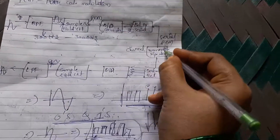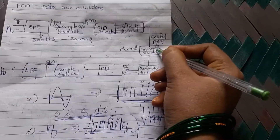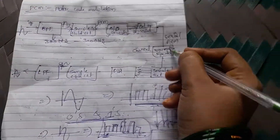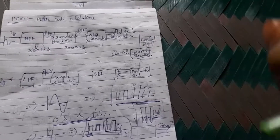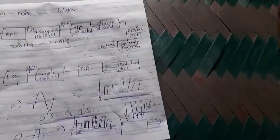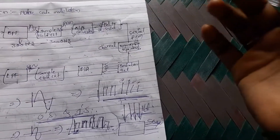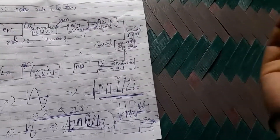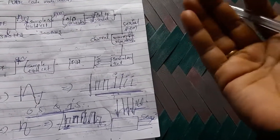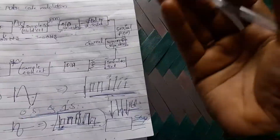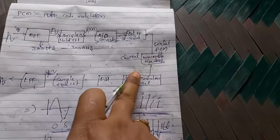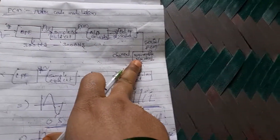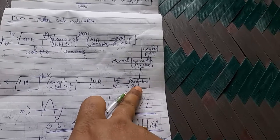The serial PCM is given to the regenerative repeaters, which act as the channel. The channel is the medium through which information is sent — for example, when sending a message from one mobile to another, we use MTSS (Mobile Telephone Switching Stations) as the channel medium.